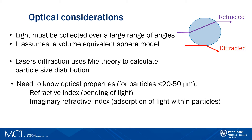Laser diffraction uses Mie theory to calculate particle size distribution by volume. Note that for particles larger than a certain size, the vast majority of light is scattered by diffraction. That certain size is determined as a multiple of the wavelength of light used for the measurement, and is typically approximated at 20–50 microns.